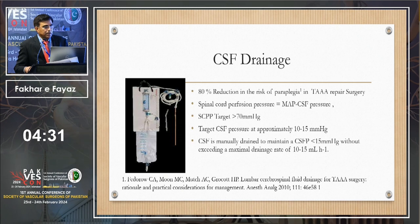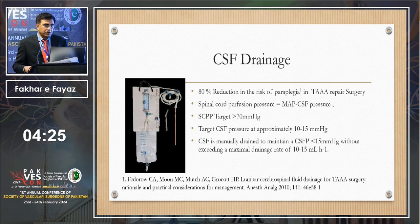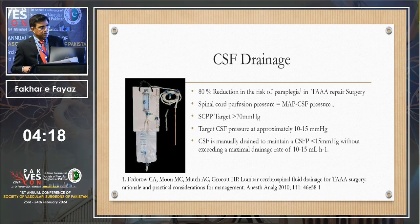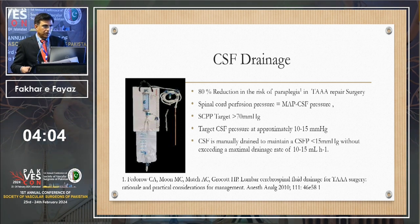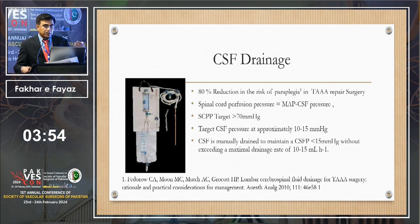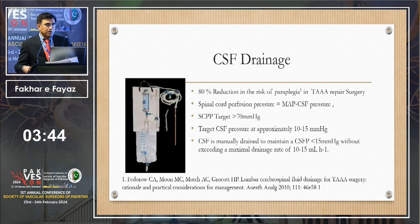A few words about CSF drainage: it provides an 80% reduction in the risk of paraplegia in thoracoabdominal aortic aneurysm surgery. Spinal cord perfusion pressure = mean arterial pressure minus CSF pressure; the target is 70 mmHg. We can either increase MAP or reduce CSF pressure. Target CSF pressure is 10 to 15 mmHg; when it goes above this, we drain CSF. The limit is 20 mL per hour — if draining more than 20 mL per hour, we stop.